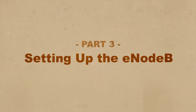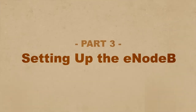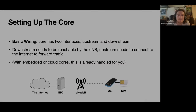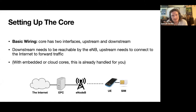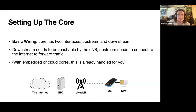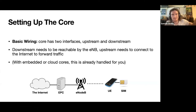Now we're going to talk about setting up a core and connecting devices to it. At a really high level, you think about the core sitting there in the middle. It's got an upstream or WAN interface to the Internet and the downstream side. It could just be on the public Internet with the same IP address for both. But one side of it — the E-NodeB side — needs to be reachable by the E-NodeB somewhere in your network or on the Internet, and the upstream side has to be on the Internet.